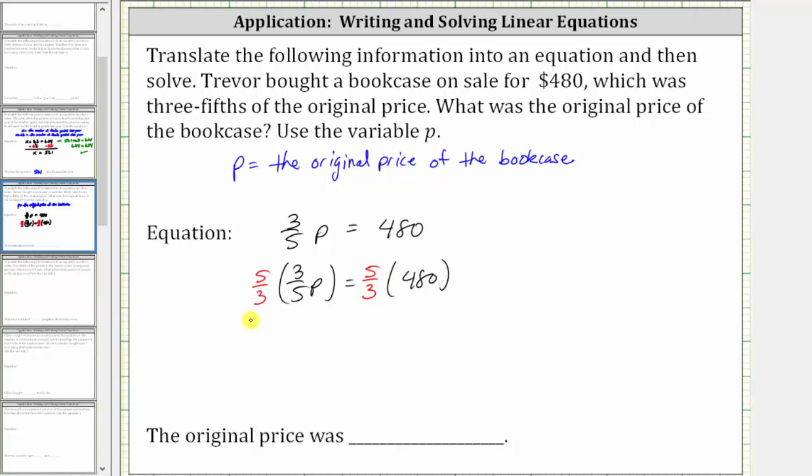On the left, five-thirds times three-fifths is equal to fifteen-fifteenths or one. Or we can show the simplifying before multiplying by simplifying out the common factors of five and three between the numerators and denominators. Simplifying out the common factor of five, five divided by five simplifies to one in the numerator and denominator. Simplifying out the common factor of three, three divided by three also simplifies to one in the numerator and denominator, giving us one times p, which is p.